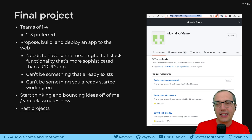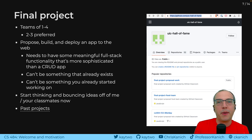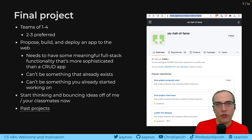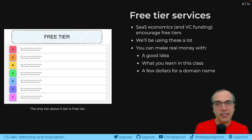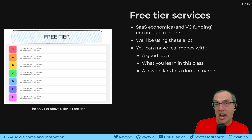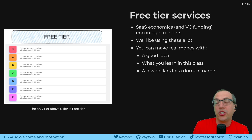This project can be done in any team from size one — by yourself — all the way up to size four. Teams of size two to three will be incentivized because it's much better to work in teams that aren't too big with a lot of coordination overhead. We'll be using free tier services a lot, and they're really amazing — if you have a good idea, the skills you learn in this class, and a few dollars for a domain name, you can start making real money. All you have to really do is find customers that want your idea and have an idea good enough that somebody else wants to pay for it.